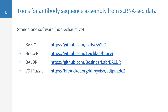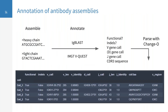Luckily, you don't have to implement these algorithms yourselves. They've already been implemented, and there are a number of standalone tools available which help do this reconstruction. However, we're not done yet — we've only assembled the heavy and light chain sequences. We still need to add annotation. That process is typically accomplished with tools such as IgBLAST or IMGT's V-QUEST, available as standalone tools or online where you can submit your sequence and receive results in a web browser.